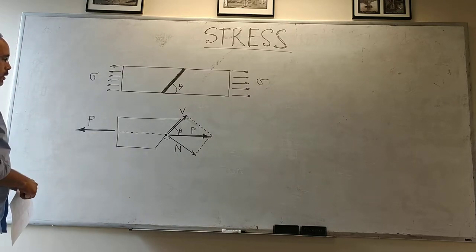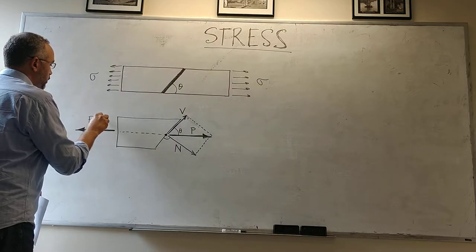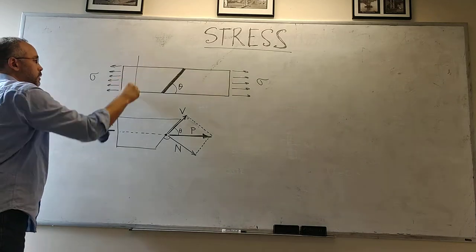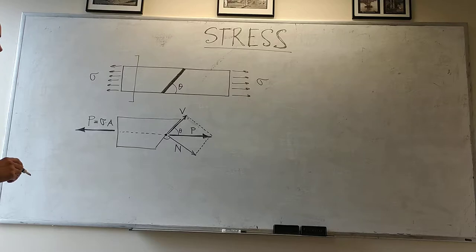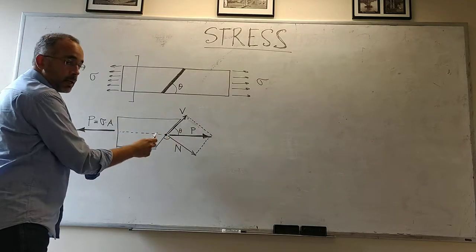P in this case equals sigma times a cross-sectional area, perpendicular to the surface. That P is going to be resisted by two forces.